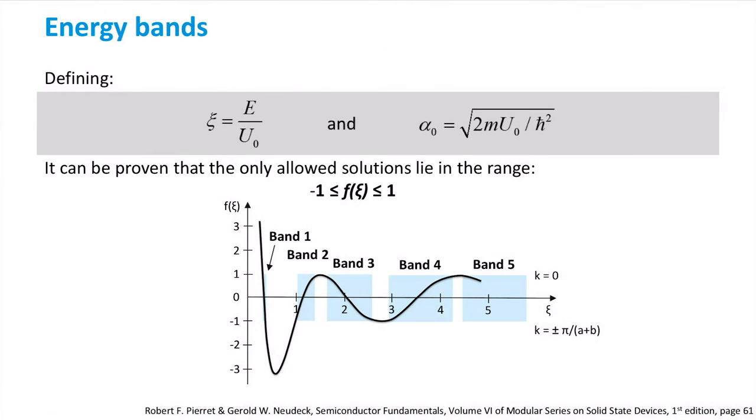If we plot the adapted equation as function of ξ, we can observe that it is an oscillatory function. The regions where the functions have values between minus 1 and plus 1 are enclosed in the blue boxes. These boxes represent sets of allowed energy states that the system or our one-dimensional lattice can have. These ranges of allowed energy states for electrons are what we call energy bands, while the spaces in between are forbidden energy states for electrons.